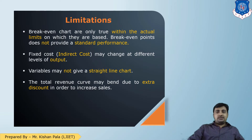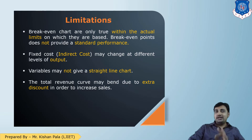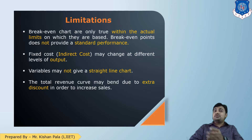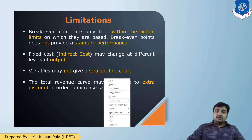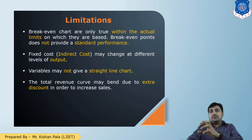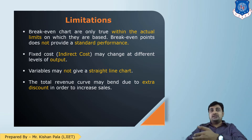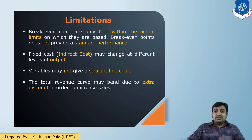There are also limitations of Break-Even analysis. First, the chart is only true within actual limits and does not provide standard performance. It does not consider indirect costs, which may change at different levels of output. The variable cost may not give a straight linear chart. The total revenue curve may be affected by extra discounts given to increase sales. Due to changing market scenarios and changing sales methods for goods and services, there may be an effect on this analysis.